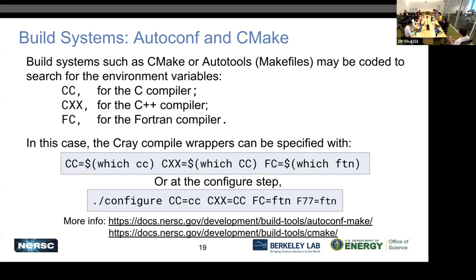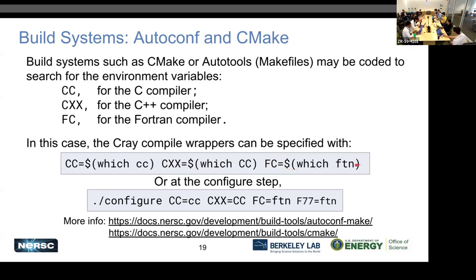On our system we want to use the Cray compiler wrappers. So if you take a Makefile or build system written for your home computer and just run it on our system, it might not function the way you want. You have to tell it to use the Cray compiler. The way to do it is: 'CC=$(which cc)' for C, 'CXX=$(which CC)' for C++, and 'FC=$(which ftn)' for the Fortran compiler.